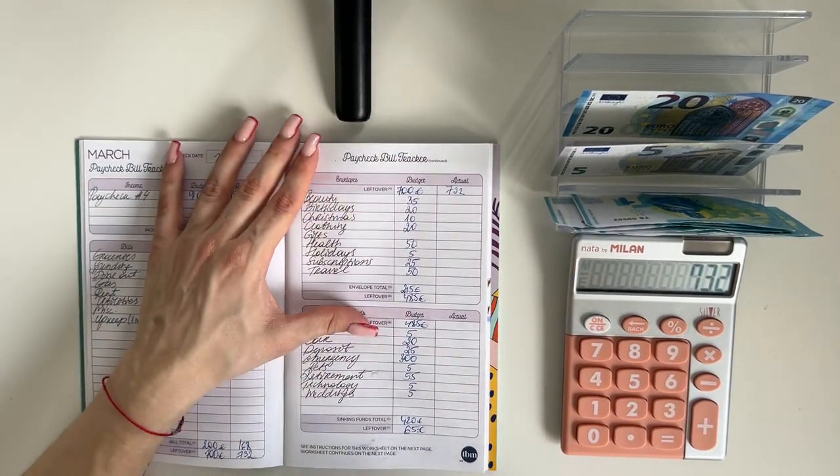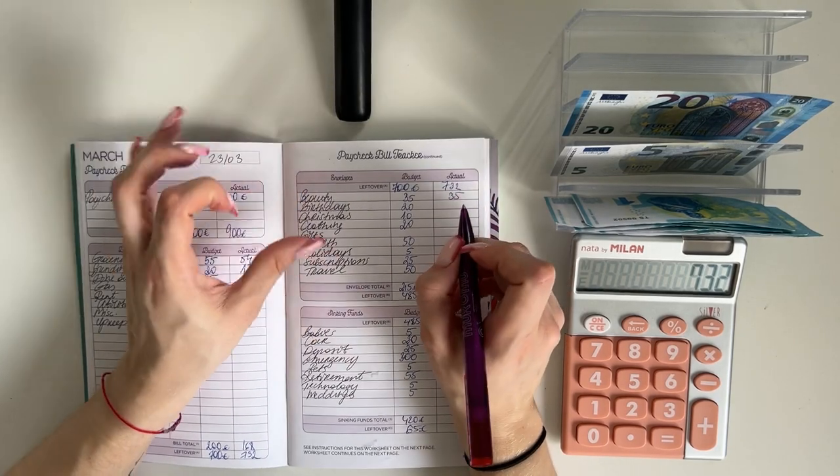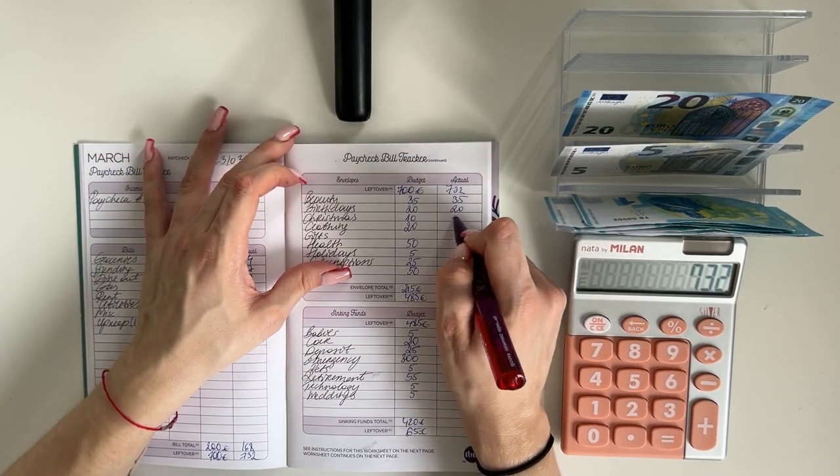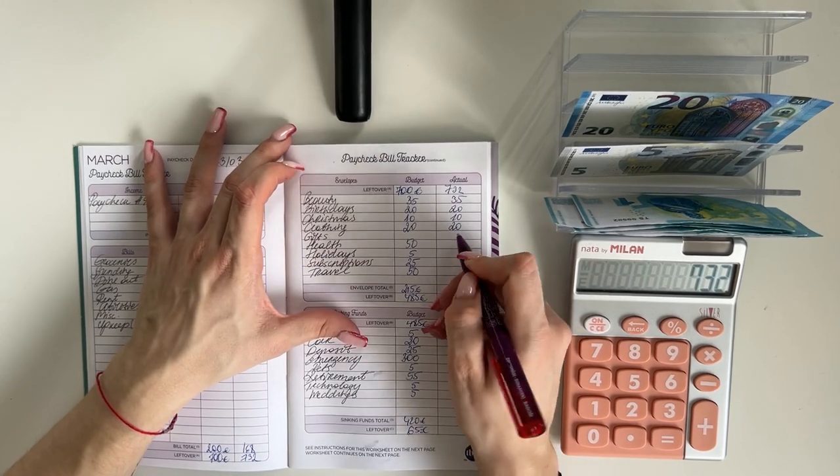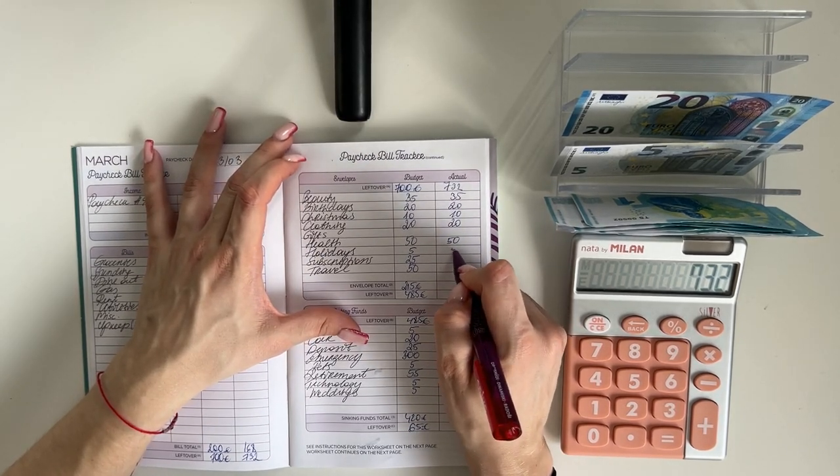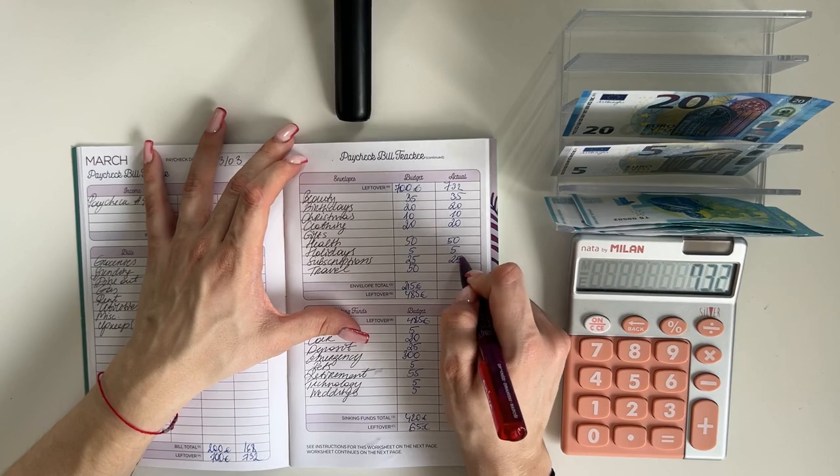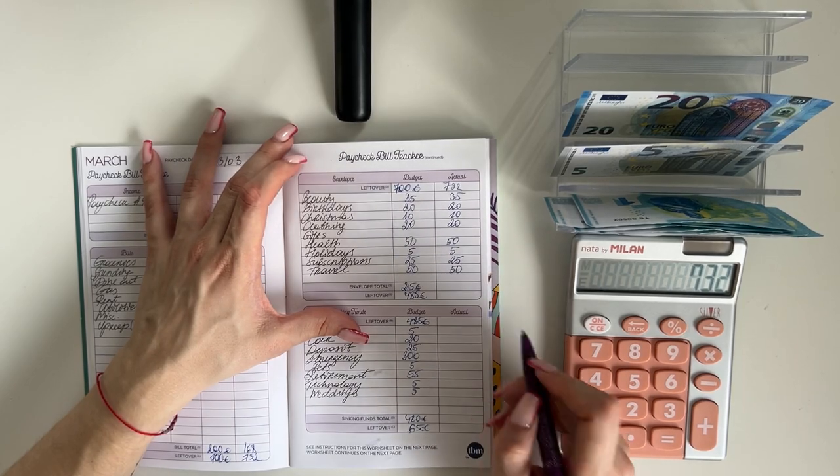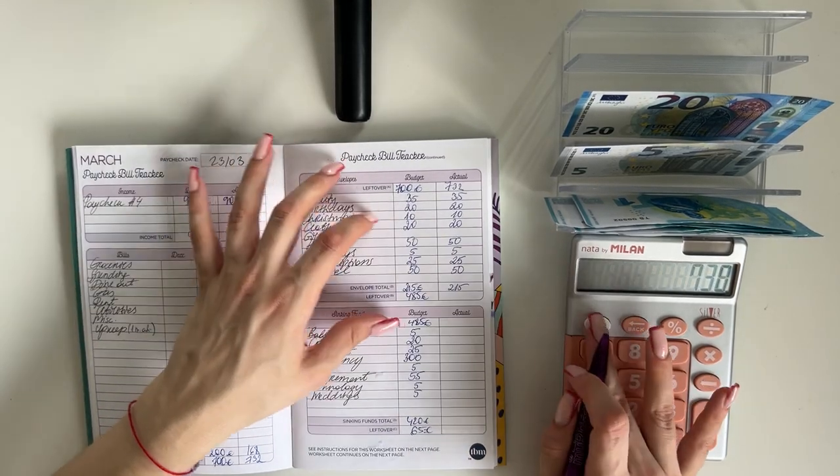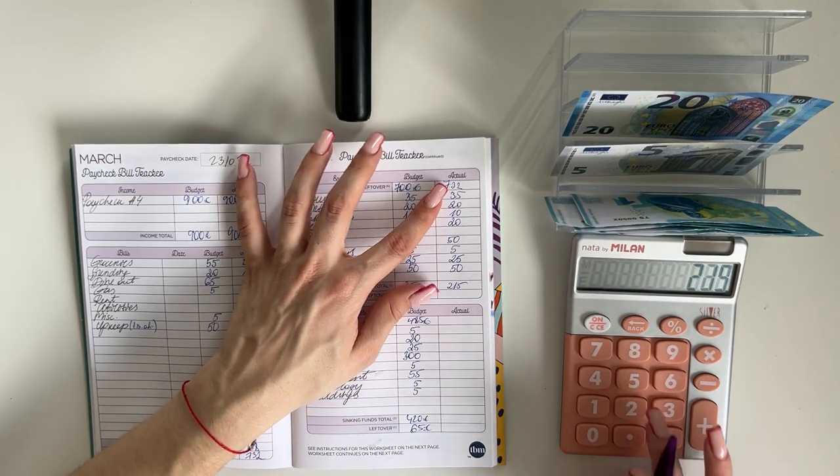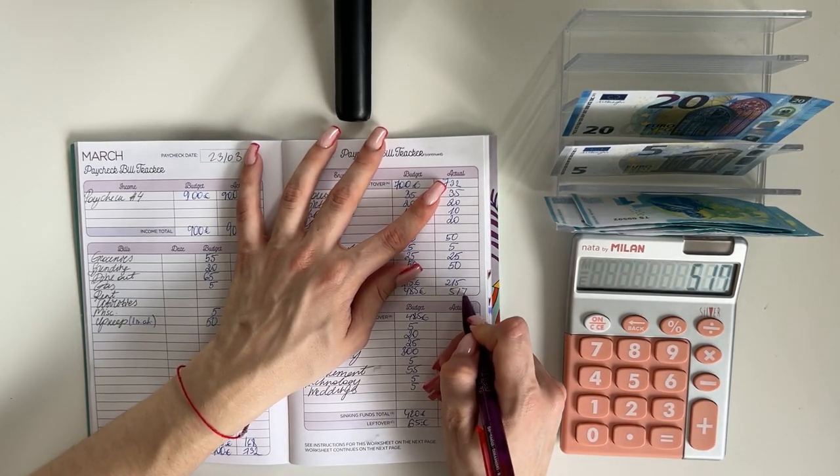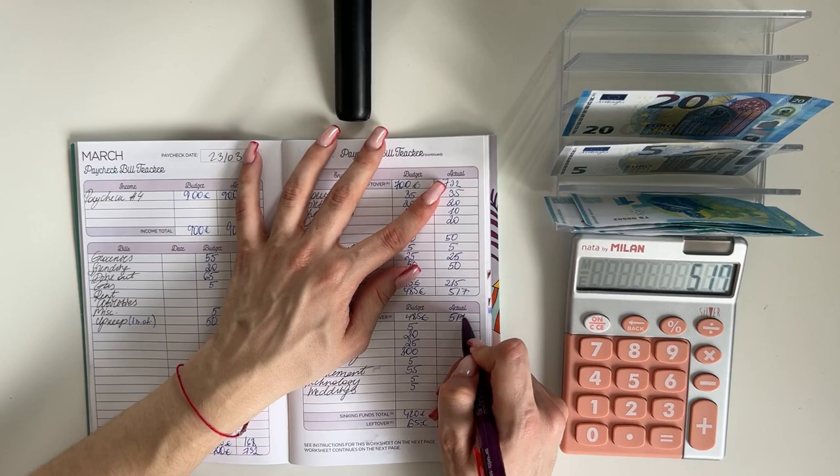We're bringing that up here to short-term sinking funds. Everything here stayed the same. 35 went into beauty, 20 into birthdays, 10 into Christmas, 20 into clothing. So it was 215. So 732 minus 215, 517 left to work with.